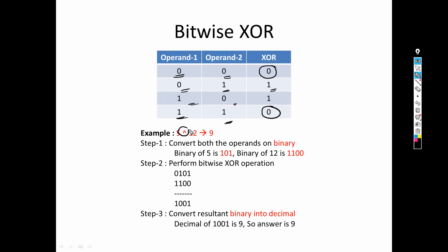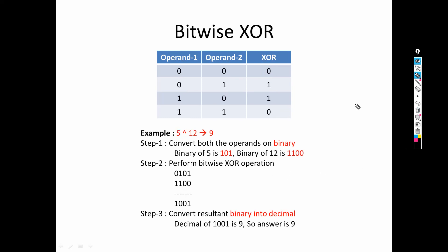Using the XOR symbol, let's apply it to 5 and 12. Convert both to binary and align the digits by adding a leading zero. Now apply XOR bit by bit: 1 and 0 are non-similar, returns 1. 0 and 0 are same, returns 0. 1 and 1 are same, returns 0. 0 and 1 are non-similar, returns 1. So we get 1001 in binary, which is equivalent to 9. Steps: convert to binary, perform XOR using the truth table, then convert the binary result back to decimal.